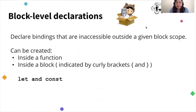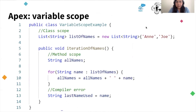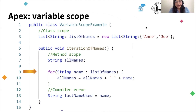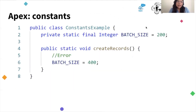We can use the keywords let and const to do this. Just as a reminder, in Apex we have several scopes. Here I am declaring a variable that I can use in the entire class. Here, a variable I can use just in the method. And here, a variable I can use just in the for loop. If I want to use any variable outside of its scope, I will get an error. We also have constants in Apex, and the only thing is that we cannot assign another value after we create the variable.